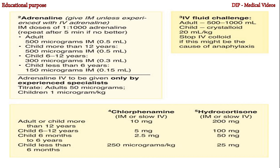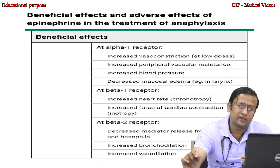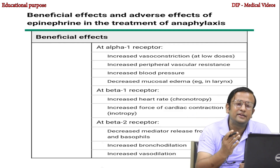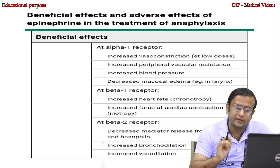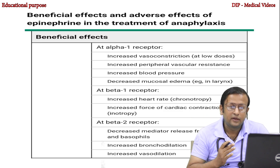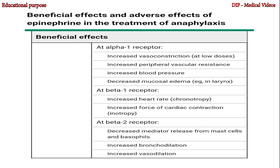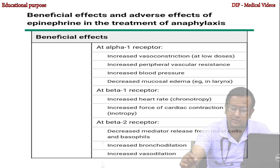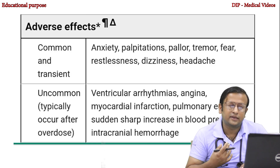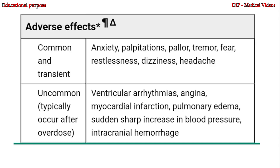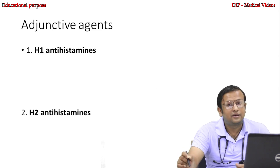The beneficial effects of adrenaline in anaphylaxis: at alpha-1 receptors it causes increased vasoconstriction, increased peripheral vascular resistance at low doses, increased blood pressure, and decreased mucosal edema. At beta-1 receptors it increases heart rate and force of cardiac contraction. At beta-2 receptors it decreases mediator release from mast cells and basophils, increases bronchodilation, and increases vasodilation. Common adverse effects include anxiety, palpitations, pallor, tremor, fear, restlessness, dizziness, and headache. Uncommon adverse effects include ventricular arrhythmia, angina, myocardial infarction, and pulmonary edema. However, there is no contraindication to adrenaline when used in anaphylaxis.